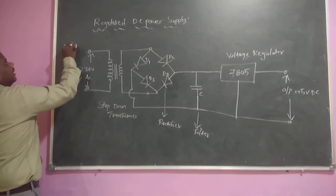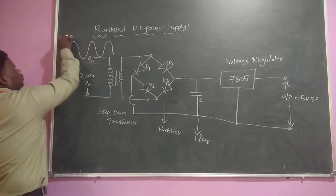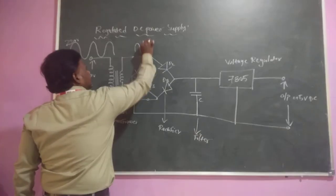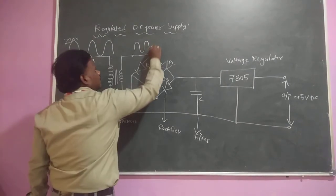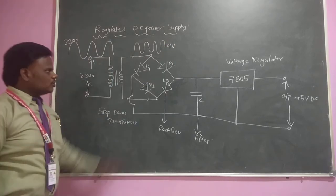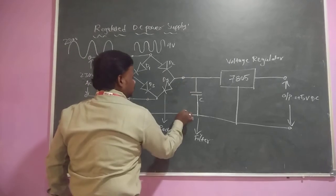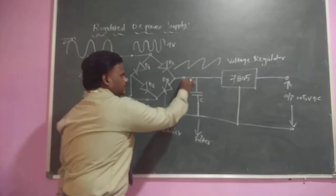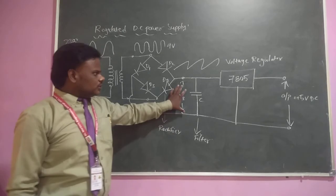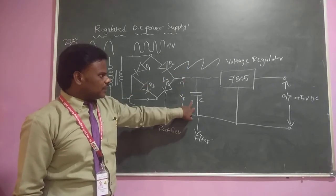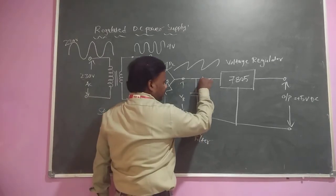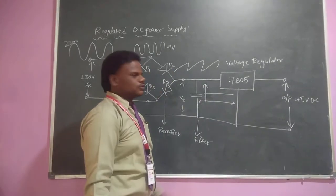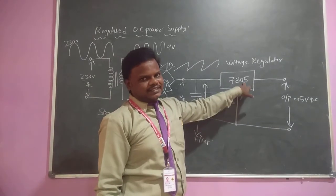Coming to the waveforms - initially it is a 230 volts AC signal. After that, the output of this transformer, for example using a 9-0-9 type of transformer, gives a 9 volts AC signal. After the rectification process, in between the output terminals, you get a pulsating DC output. This pulsating DC output of the rectifier is applied to the capacitor filter. After the capacitor filter, the output will be a constant output. This constant output is then applied to the 7805 voltage regulator.